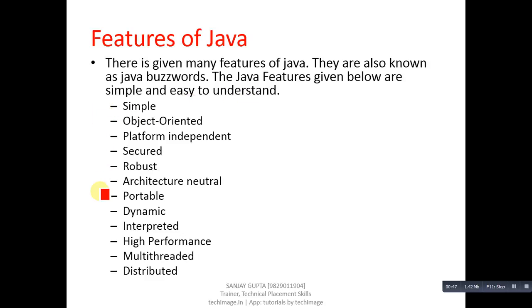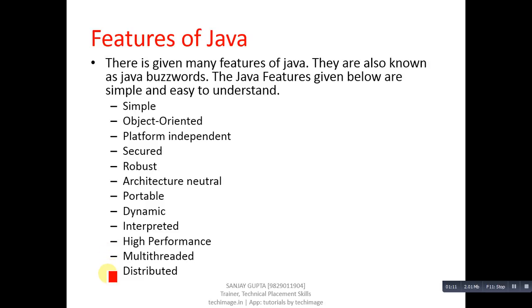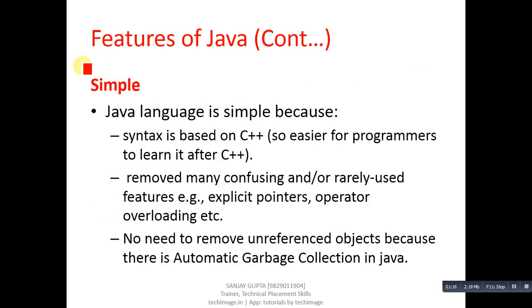You have to understand all these features of Java so that you can face various questions related to Java in your viva or placements. The features are: simple, object-oriented, platform independent, secured, robust, architecture neutral, portable, dynamic, interpreted, high performance, multi-threaded, and distributed. Now I am going to explain each and every feature of Java in detail.